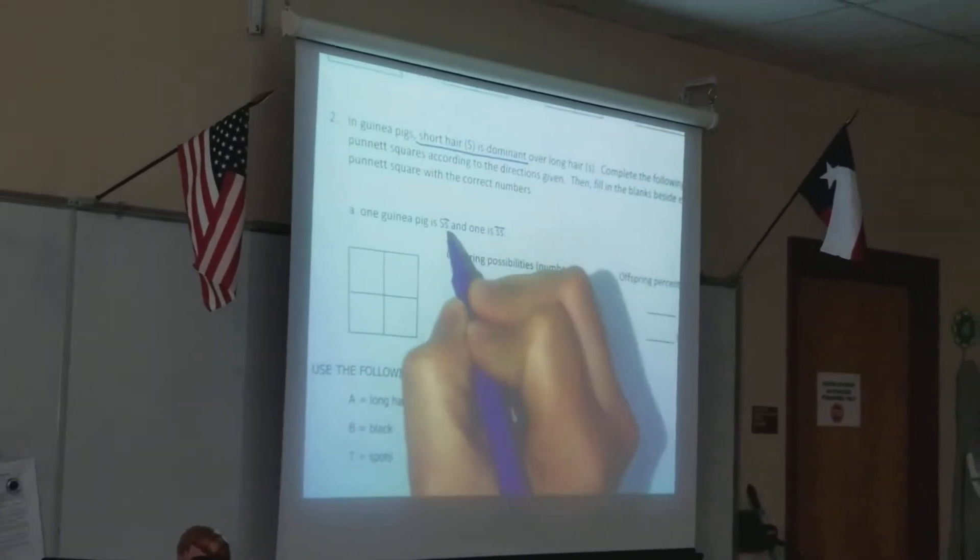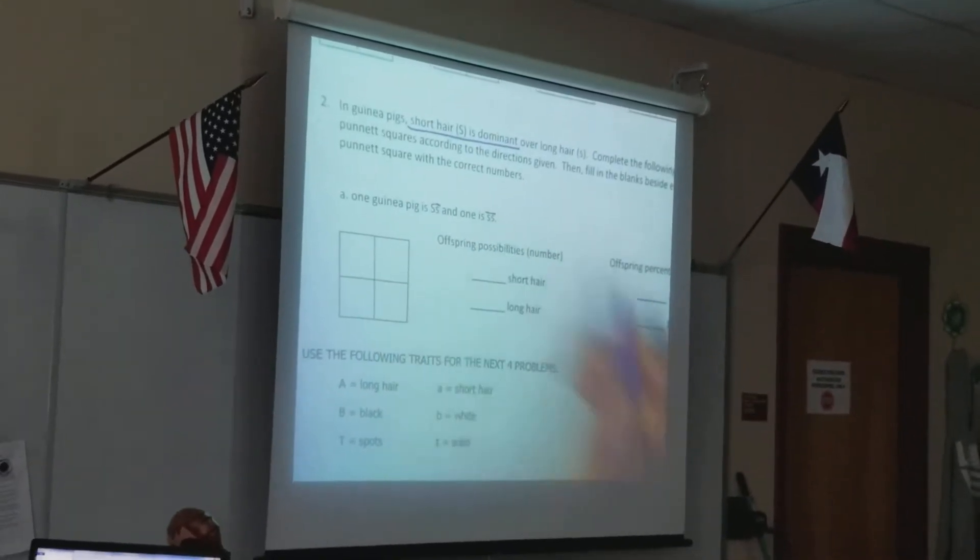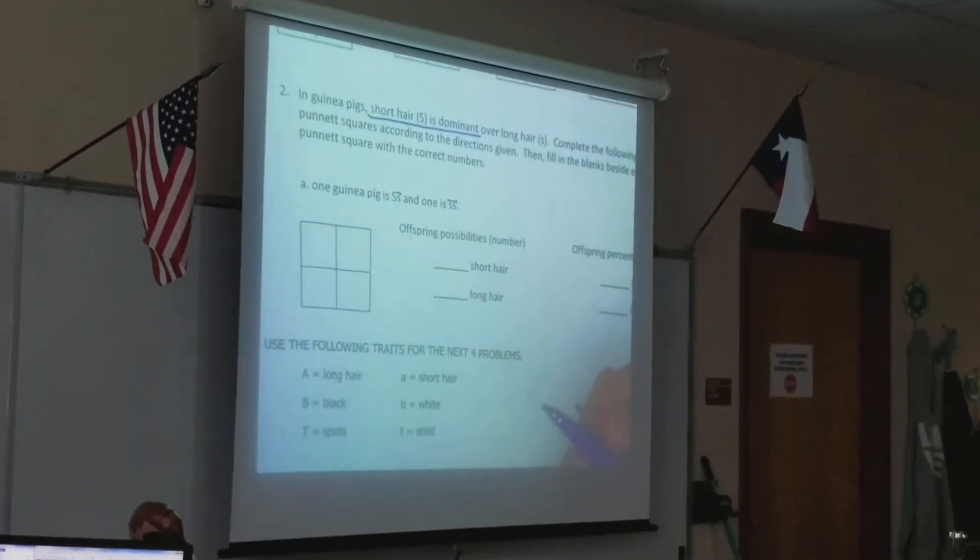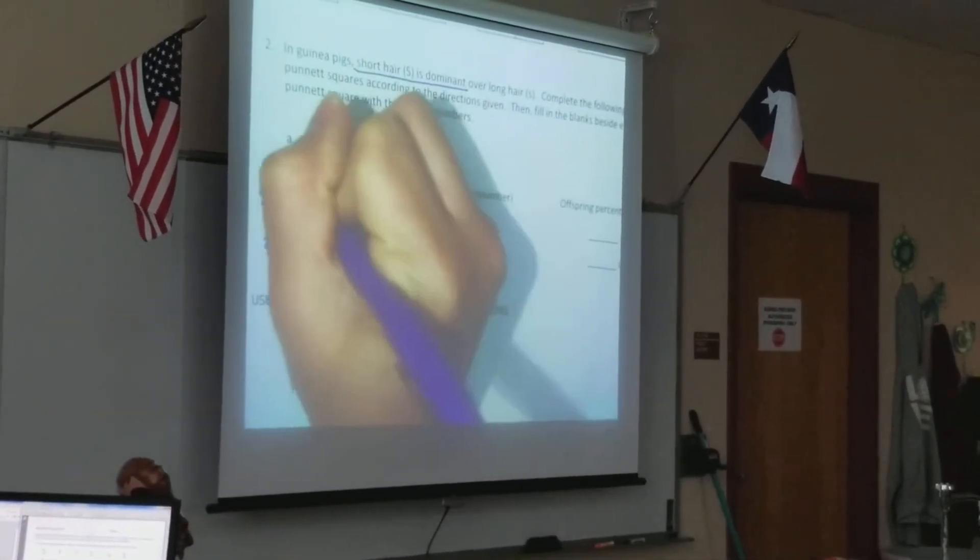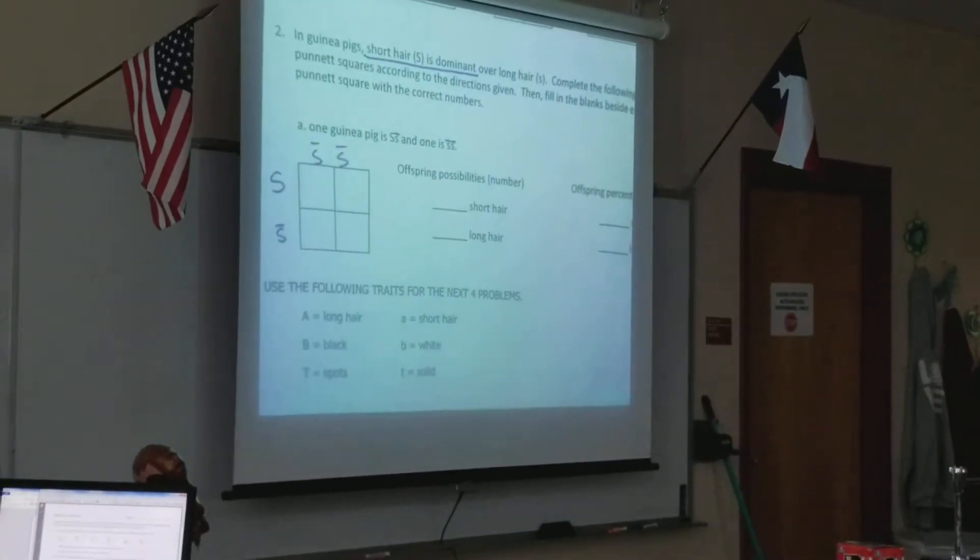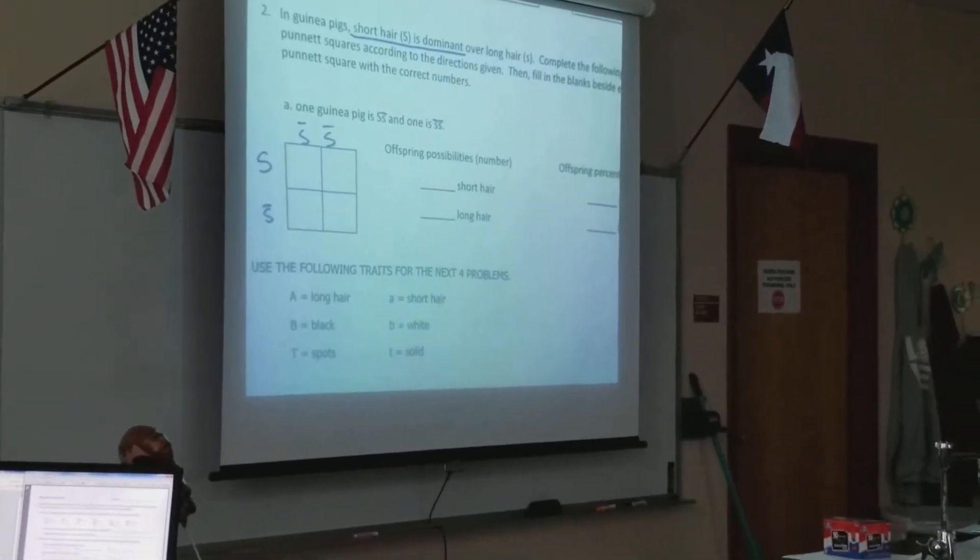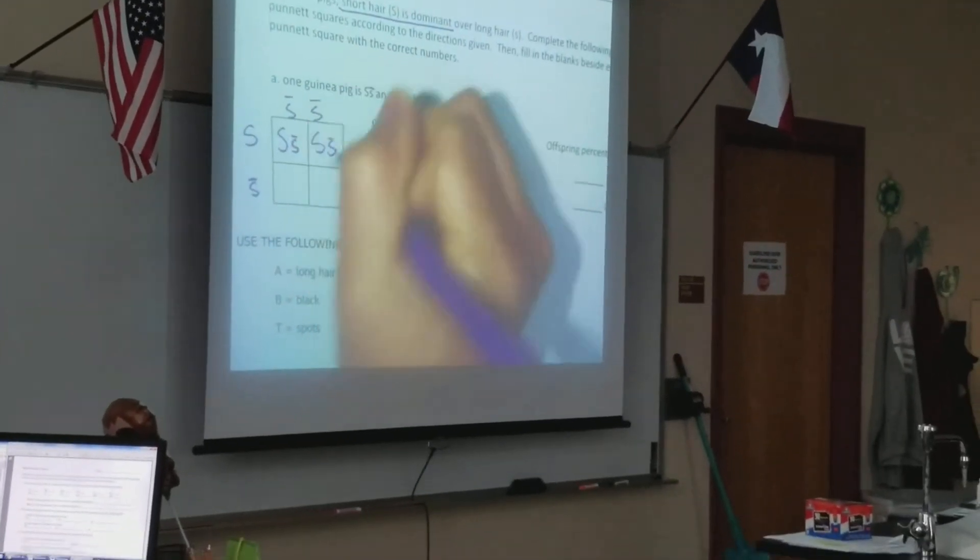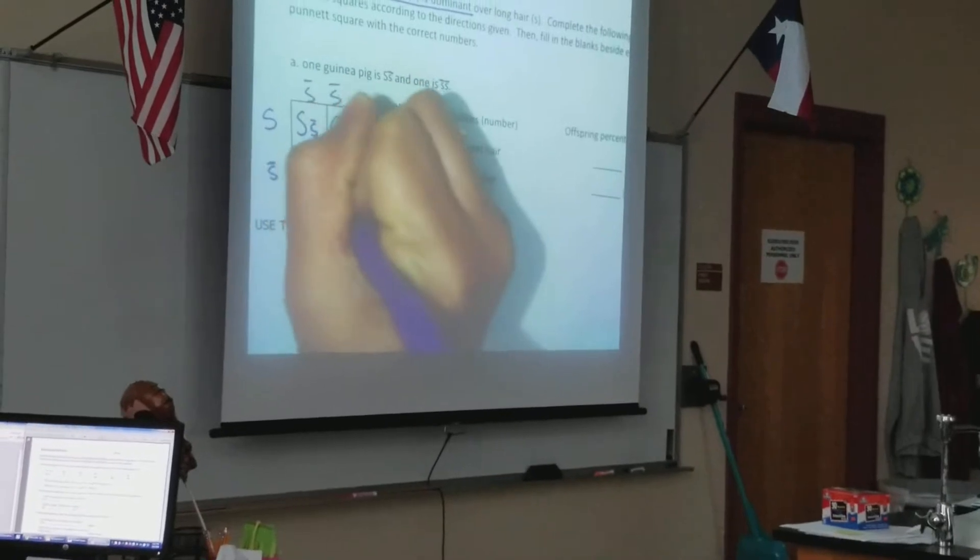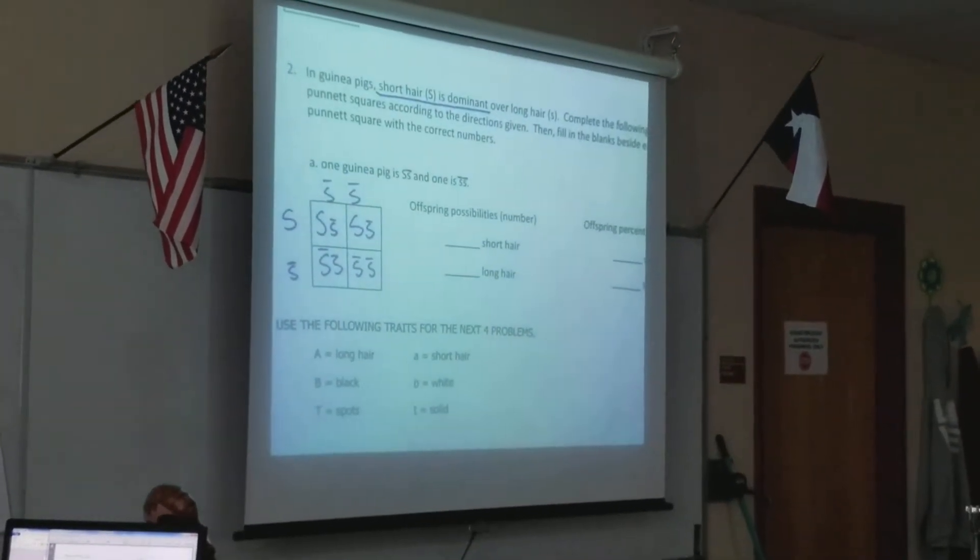So it's telling you you're crossing a heterozygous with a homozygous recessive. The law of segregation tells you that you must put one parent on this side and the other on this side. And I know that my little dashes are telling me that these are going to be lowercase. You go ahead and you drop your alleles. And now you have all of your probabilities.